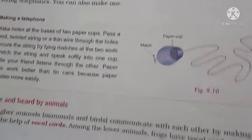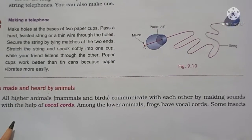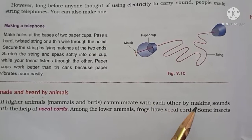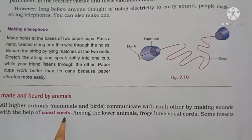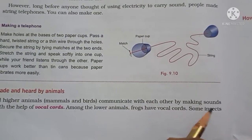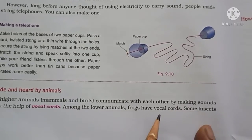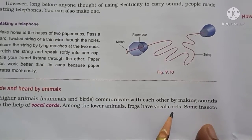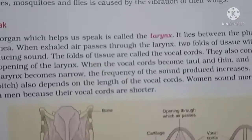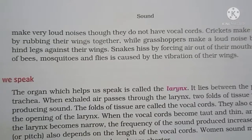Our next topic is sound made and heard by animals. All higher animals — mammals and birds — communicate with each other by making sounds with the help of vocal cords. Among the lower animals, frogs also have vocal cords. Some insects make loud noises without vocal cords — either by rubbing their wings together or by rubbing their hind legs against their wings.